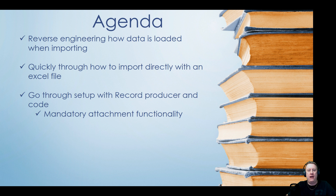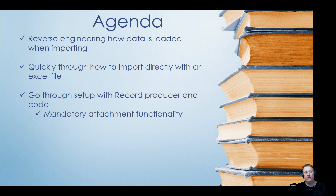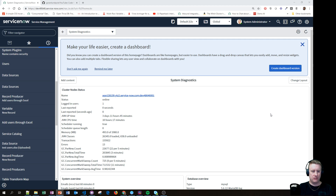It came from a question I got. What we're going to look at is how, through a record producer, we can allow the user to attach an Excel file and upload that into the data. I'm going to show you a little bit of reverse engineering - just how do we actually understand how it works - then a quick show of how imports work with import sets. I'm not going to go deep into all the settings of import set tables and transform maps, then we'll set up a record producer, and take a quick look at the new Madrid mandatory attachment functionality.